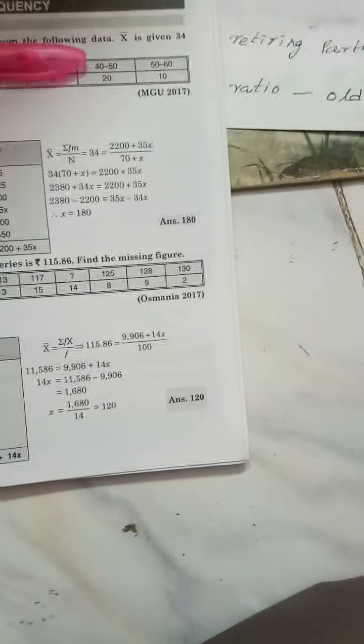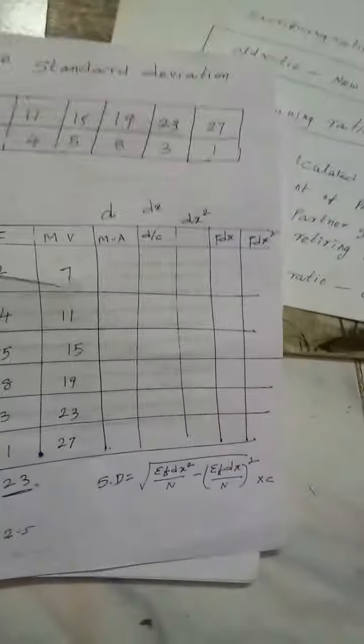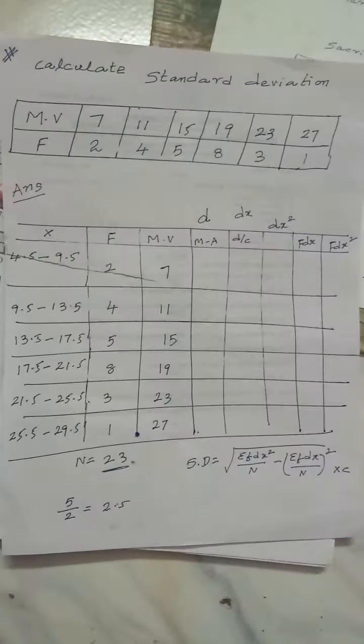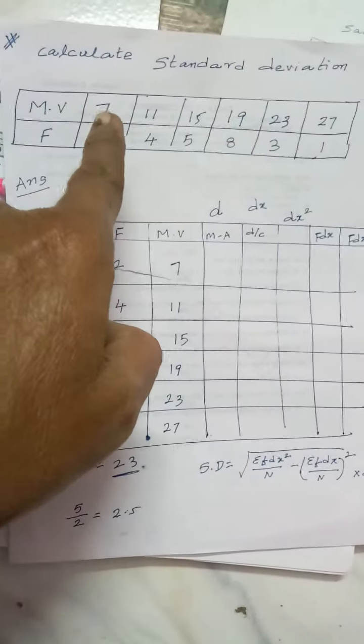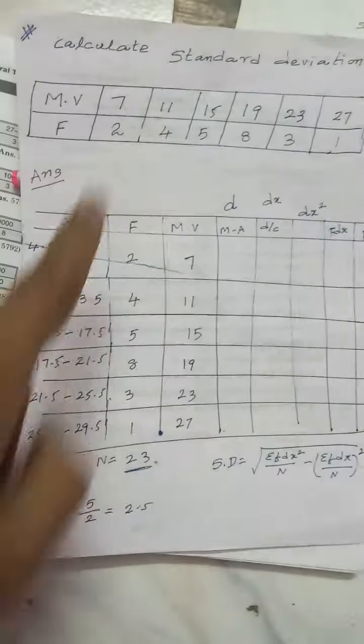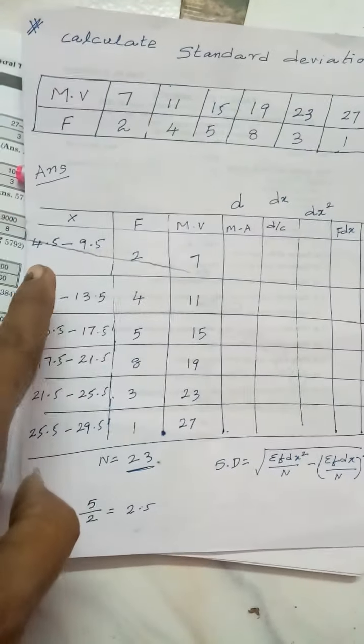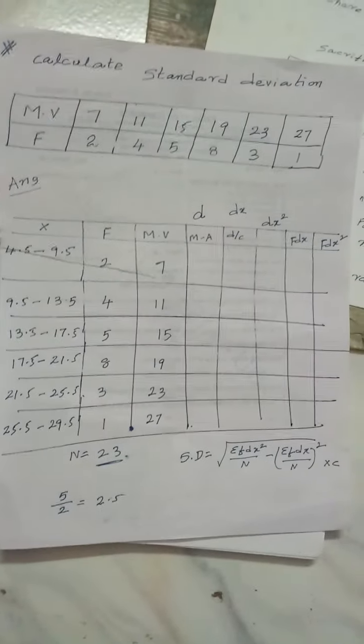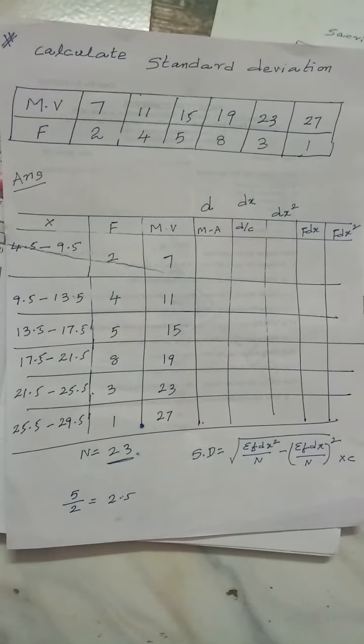Then my dear students, sometimes what happens is they will give mid values. When mid value is given, we have to convert into a class like this. Do you see the difference between seven and eleven? Five. Five by two, that is two point five. Seven minus two point five is the lower limit. Seven plus two point five is the upper limit and mid value is given.